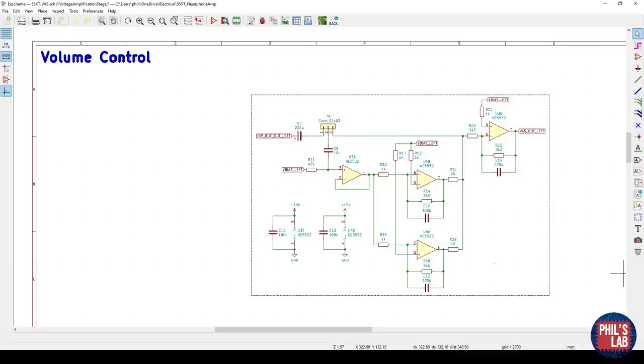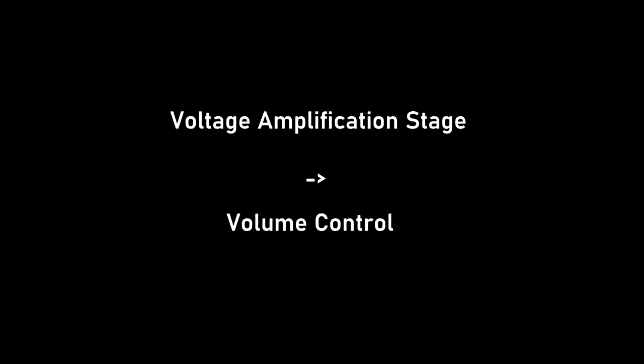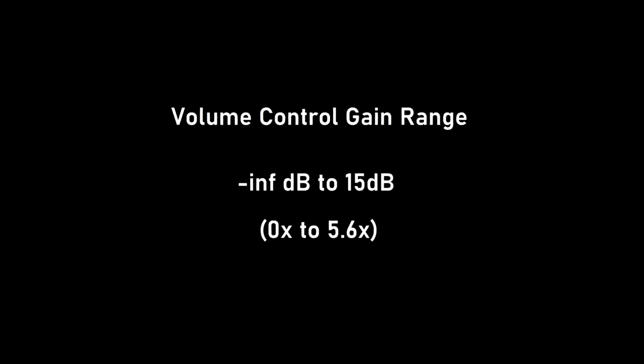Here's the schematic of the voltage amplification stage, and don't worry if this looks a bit complicated, we're going to break it down and really try to understand how this works. Overall this is actually called a Baxandall active volume control stage. But now let's quickly talk about what a voltage amplification stage should actually do. Essentially this is a volume control and provides all of the voltage gain in the amplifier.